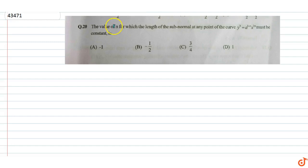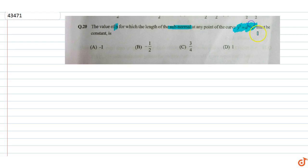The question given is: find the value of n for which the length of the subnormal at any point of the curve y³ = a^(1−n) · x^(2n) must be constant.